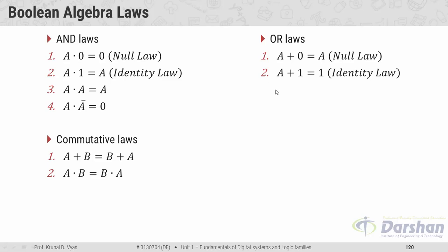The second OR law is: A OR 1 is always 1, which is known as the identity law. If we take zero as input, zero OR one is one; and one OR one is one. This identity law is also very useful for reduction.